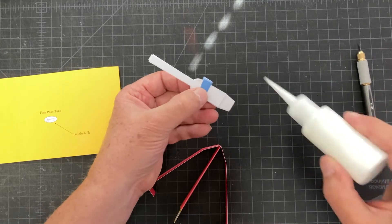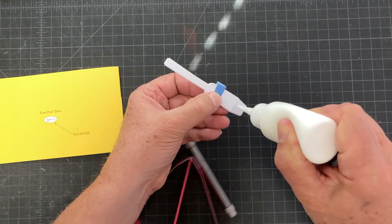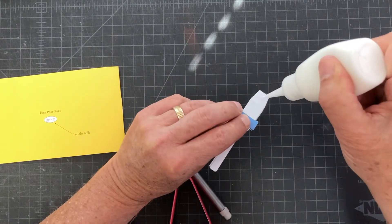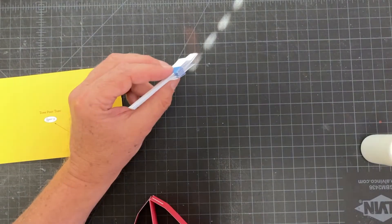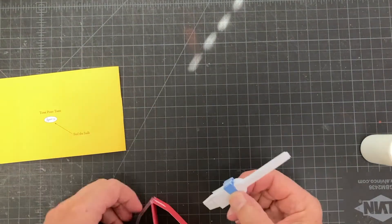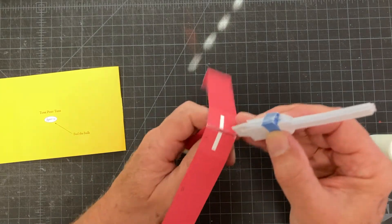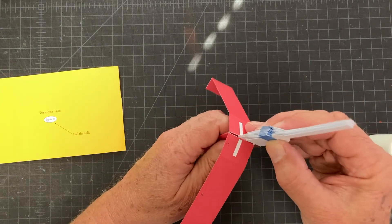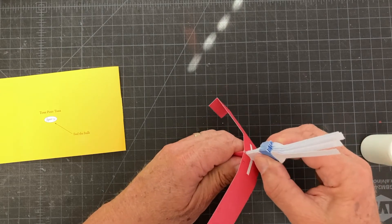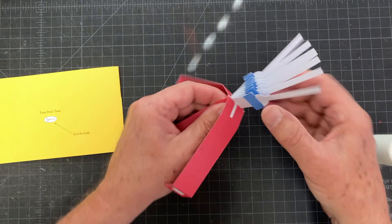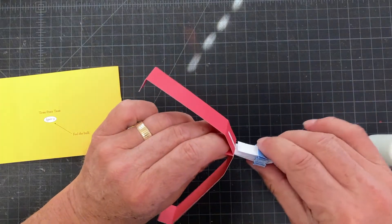So now I'll put a little bit of glue right there, a little bit of glue here. Slide that in place. Okay, that's how that glues.